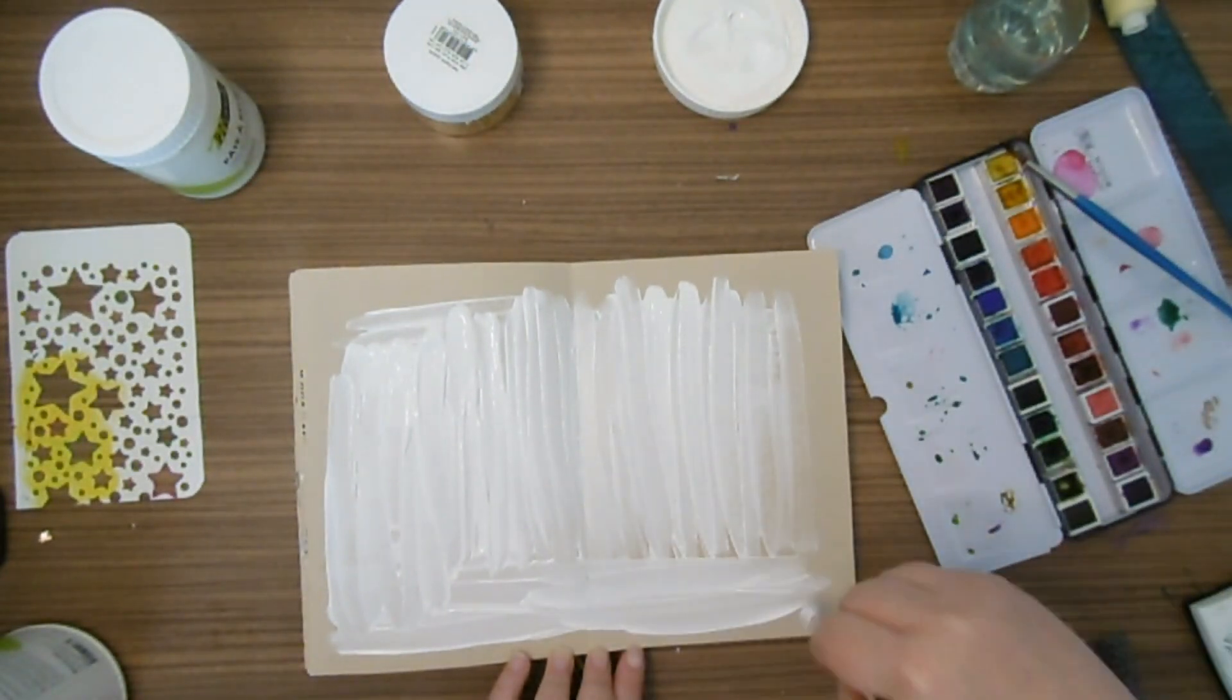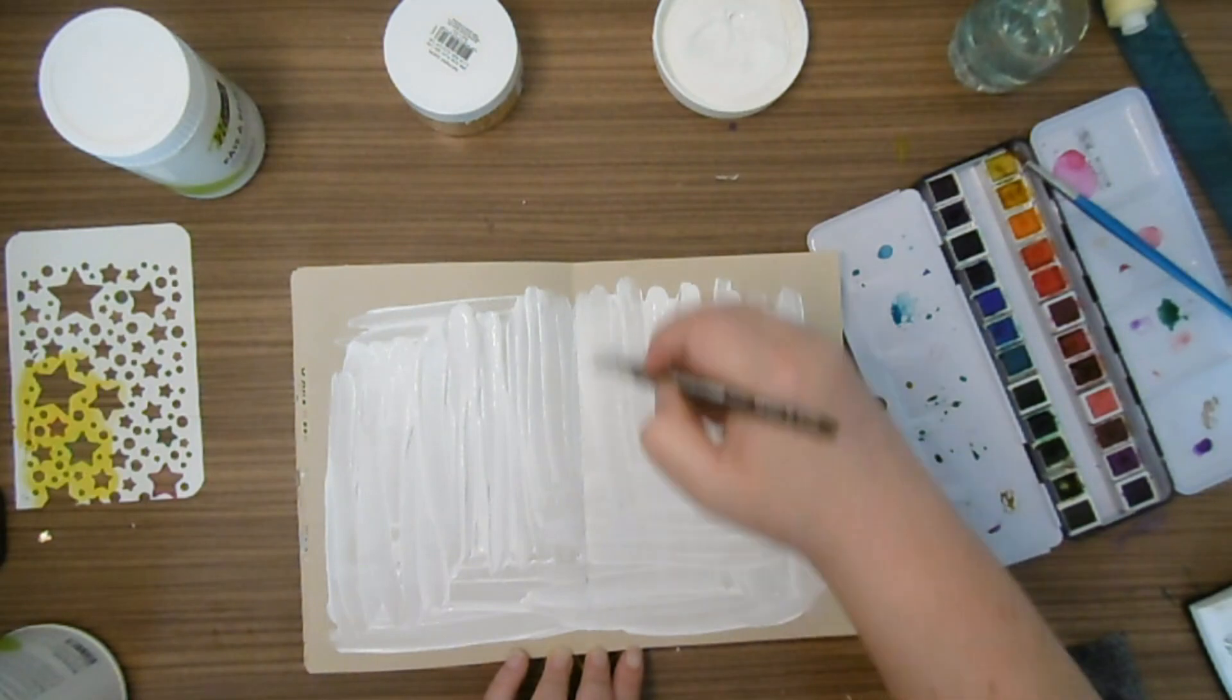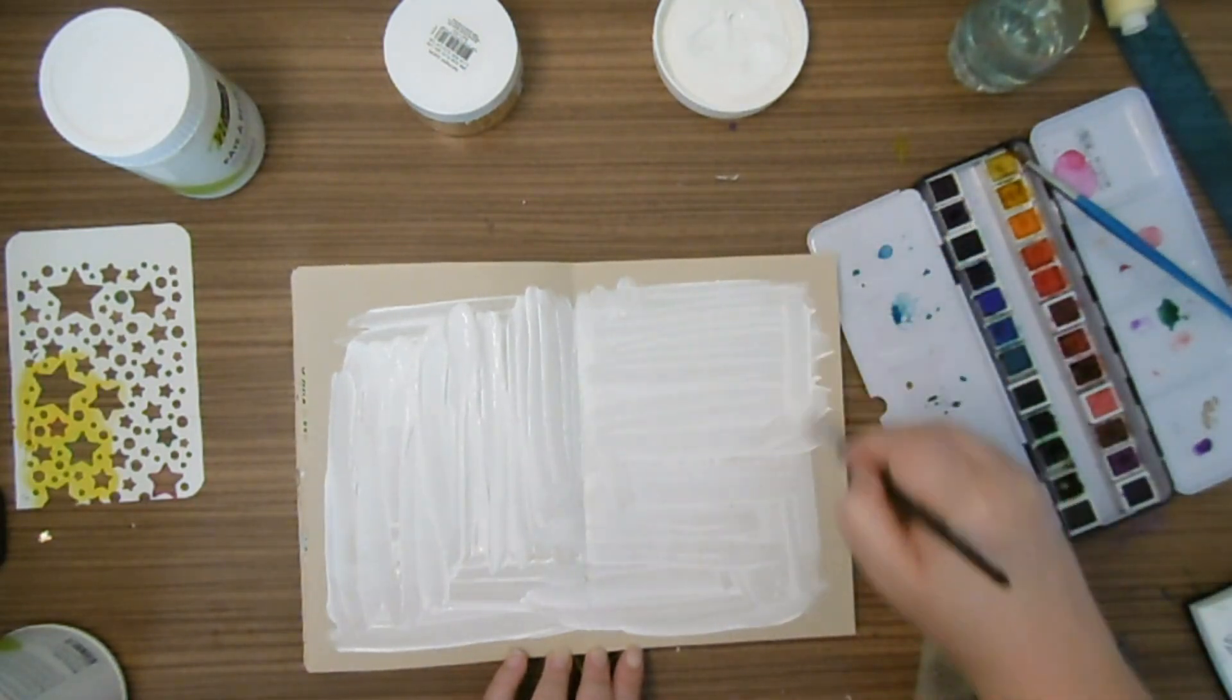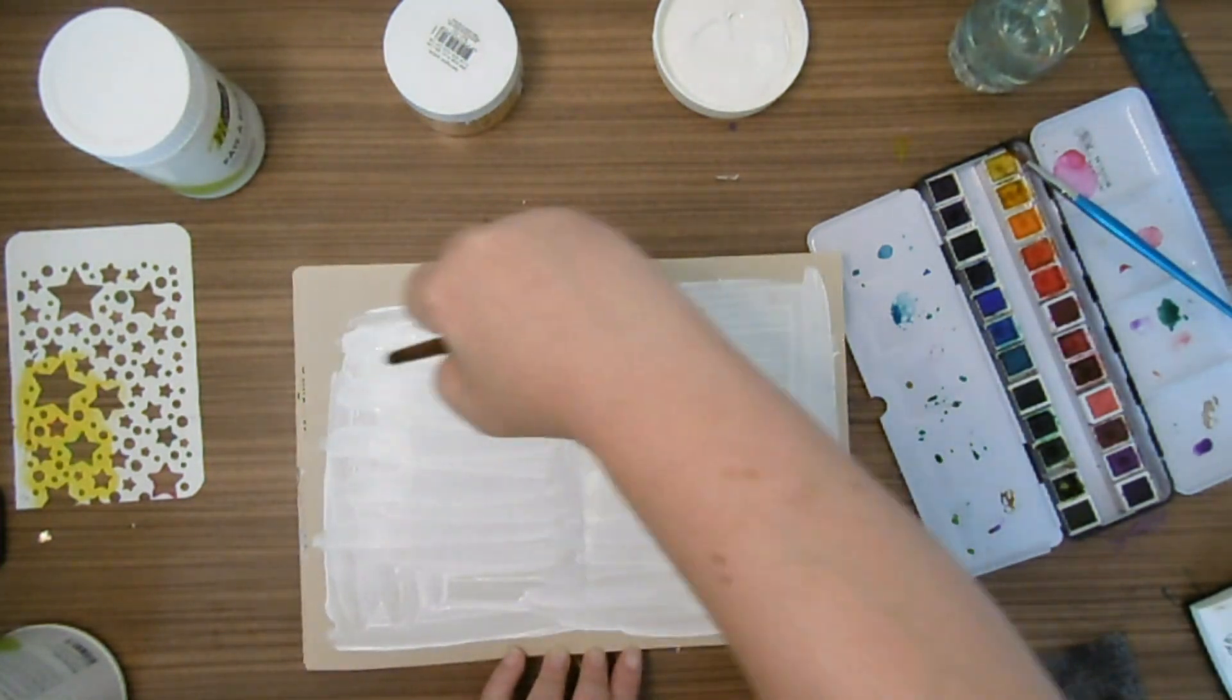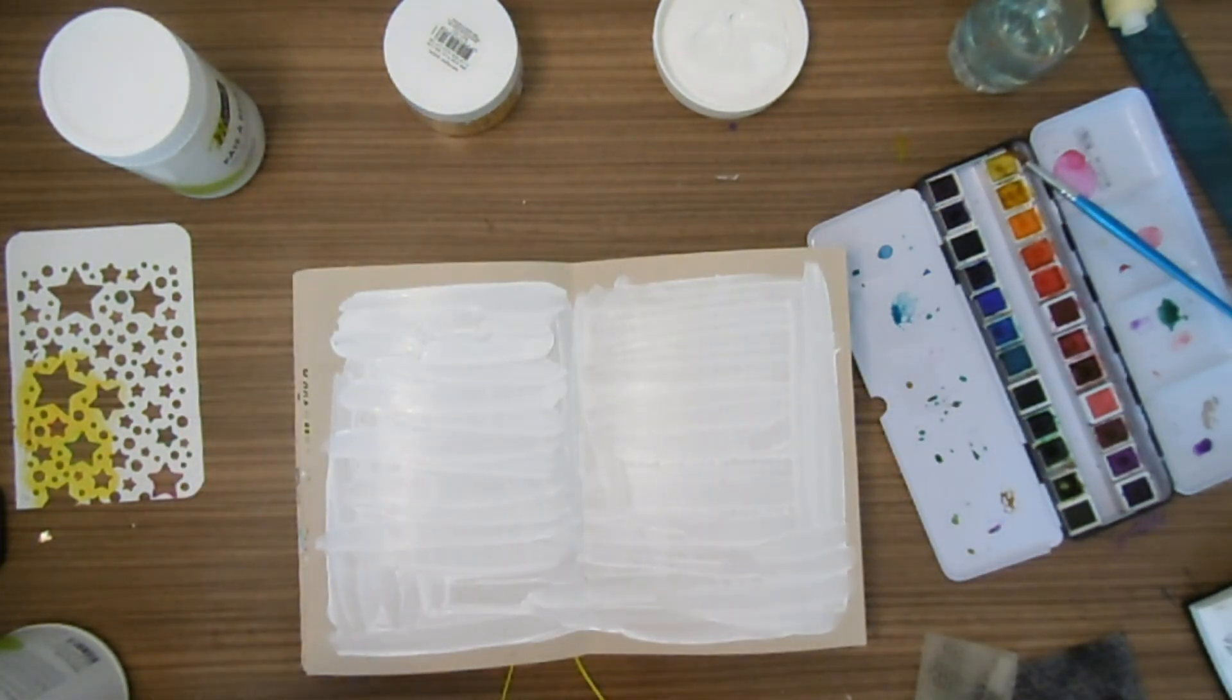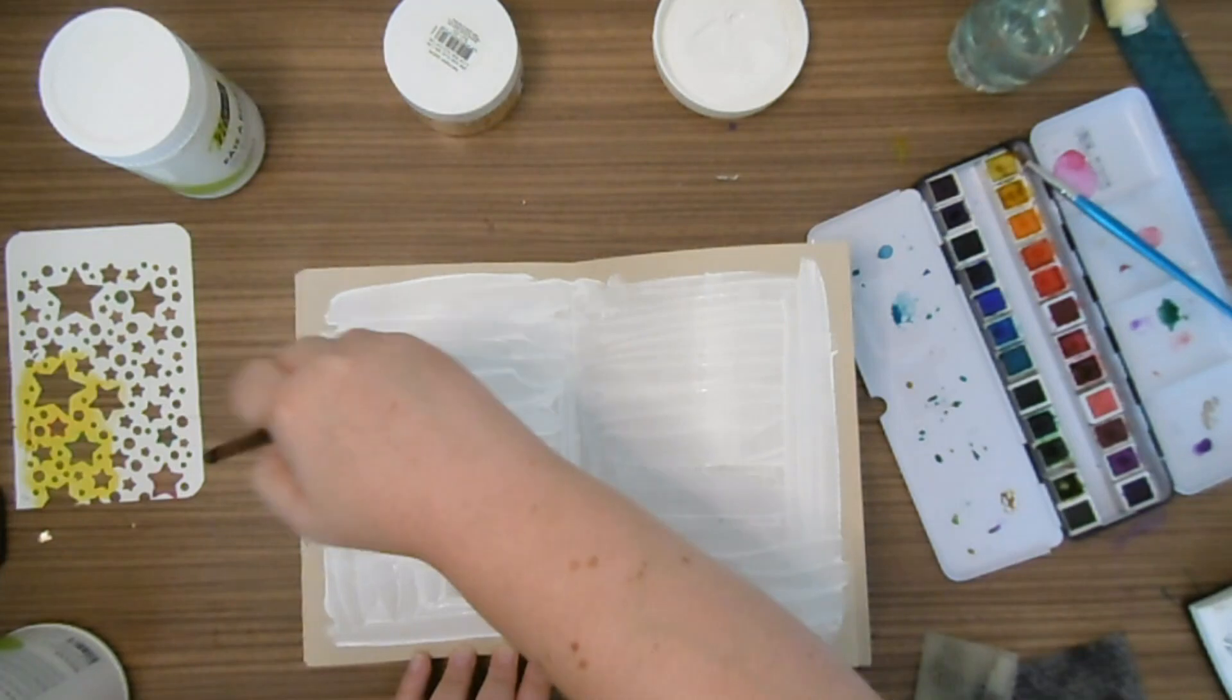Alors je commence par étaler la gesso pour faire un fond sur toute la page. C'est le moment pour moi de me présenter. Si tu ne me connais pas encore, moi c'est Marie. J'aime mettre de la beauté et de la magie dans ce monde. Dans ces vidéos, je te parle de mes créations et de mon processus créatif.